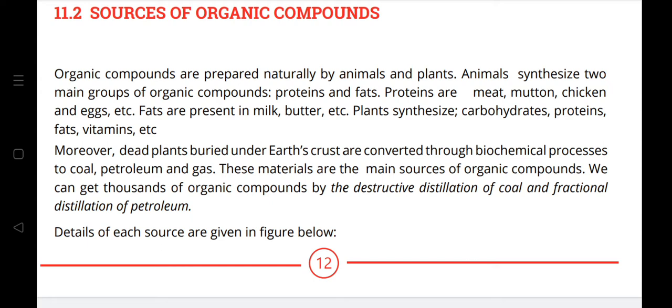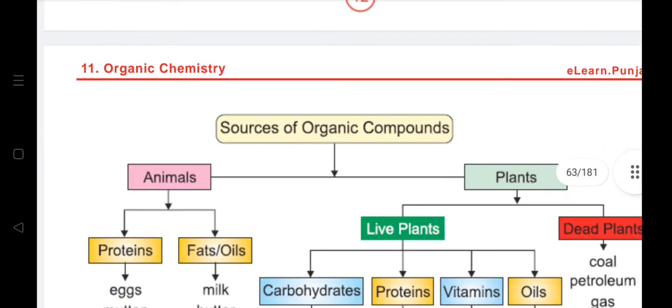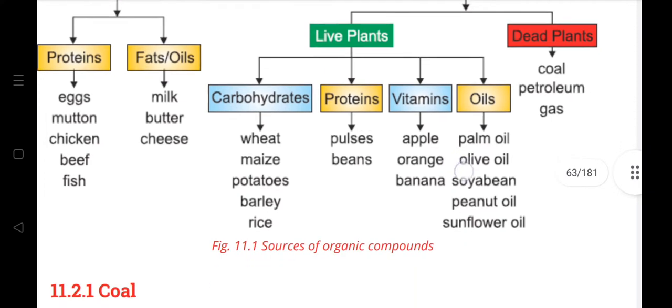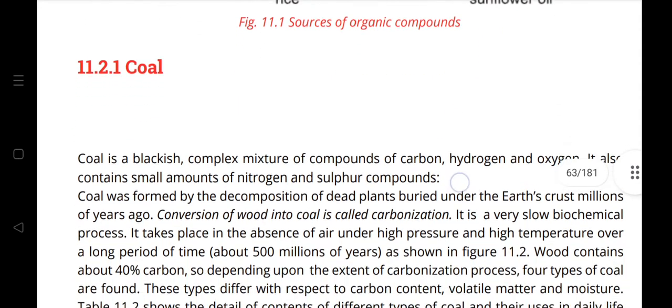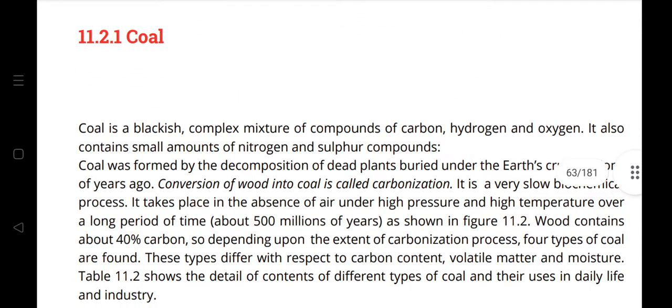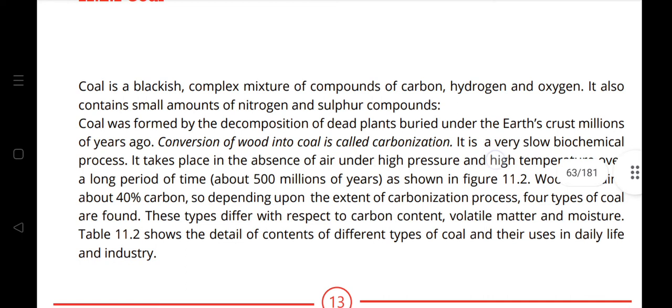These materials are the main sources of organic compounds. You can get thousands of organic compounds by the destructive distillation of coal and fractional distillation of petroleum. From the textbook Figure 11.1: coal is a blackish complex mixture of compounds of carbon, hydrogen, and oxygen.